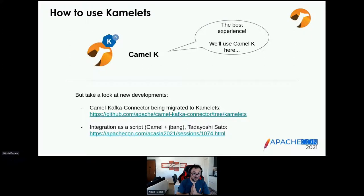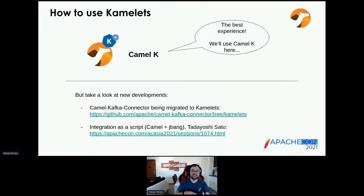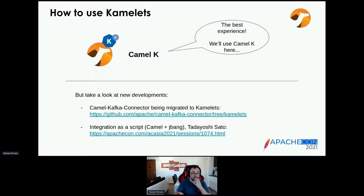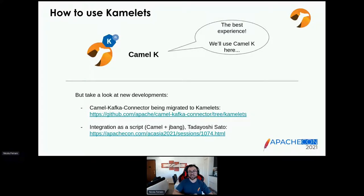How can you use Camelets? There are many ways. The fundamental one is using Camel K. Camel K is an extension of Kubernetes — an operator that works with Vanilla Kubernetes and also OpenShift. Camelets were born in the context of Camel K, but now we are expanding them to other projects. For example, in Camel Kafka Connector, there is a branch going to be merged that allows using Camelets. There are also presentations about using them with Camel Core and JBang. But we are focusing on Camel K, and you will see why in a moment.